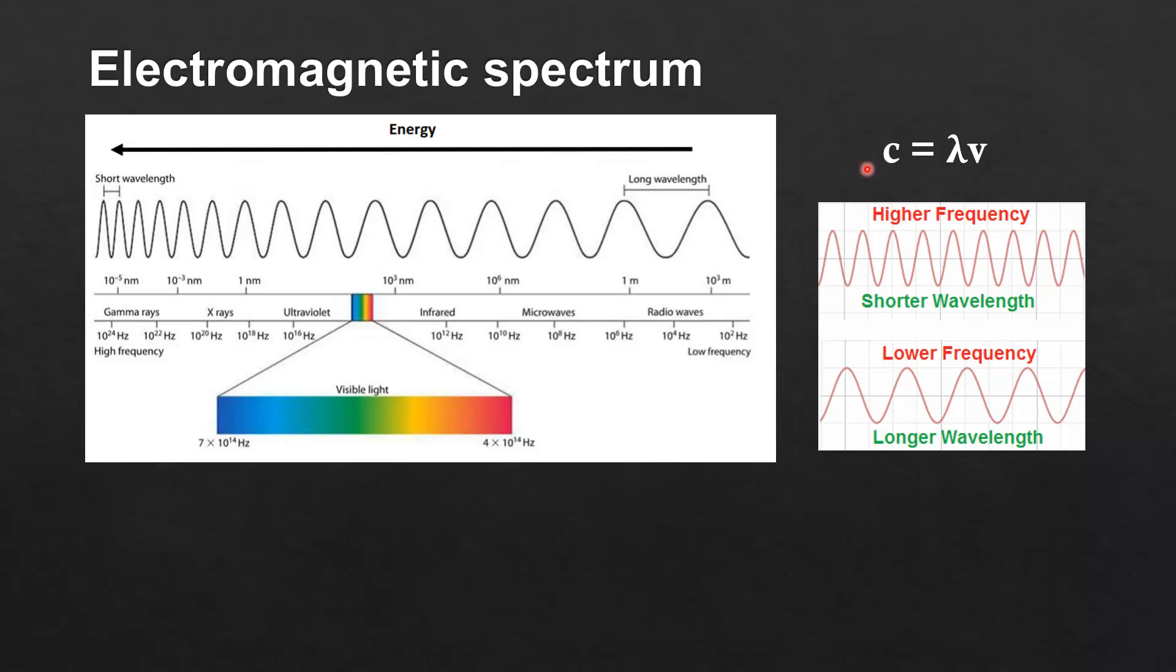The relationship between frequency and wavelength can be seen in this equation here. The speed of light which is a constant equals lambda which is wavelength times nu which is frequency.